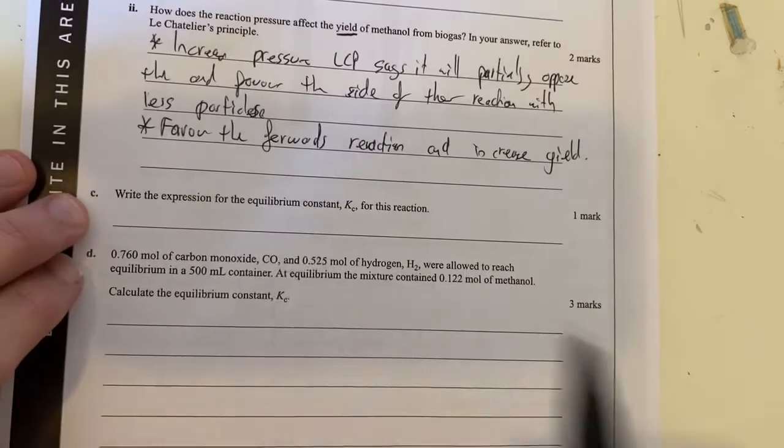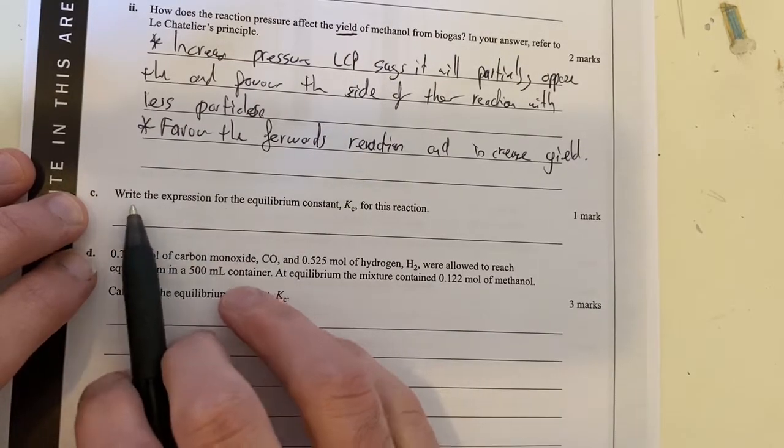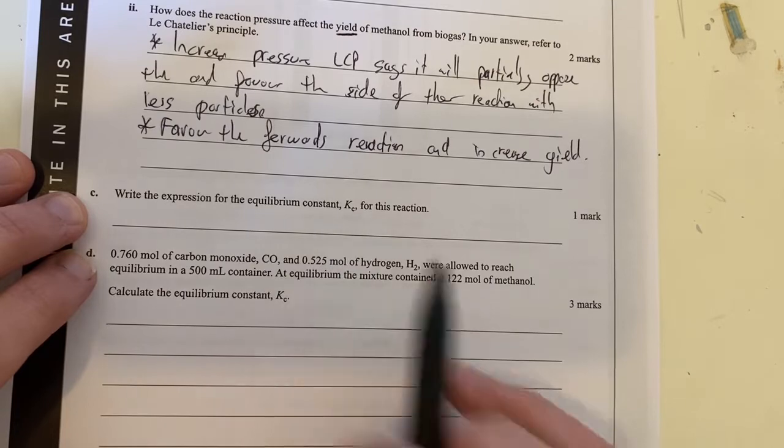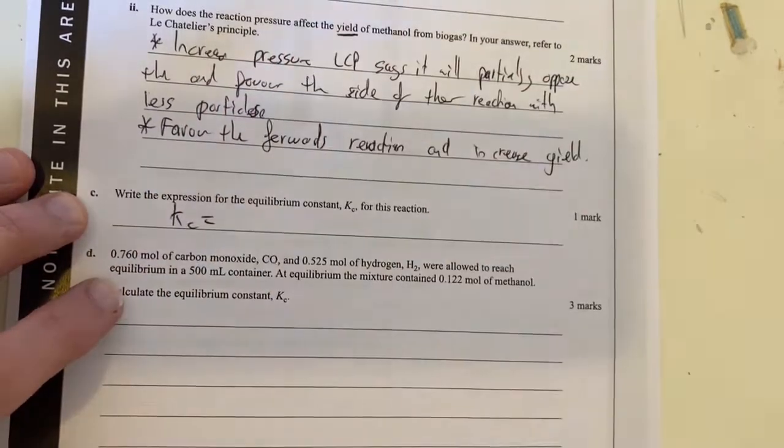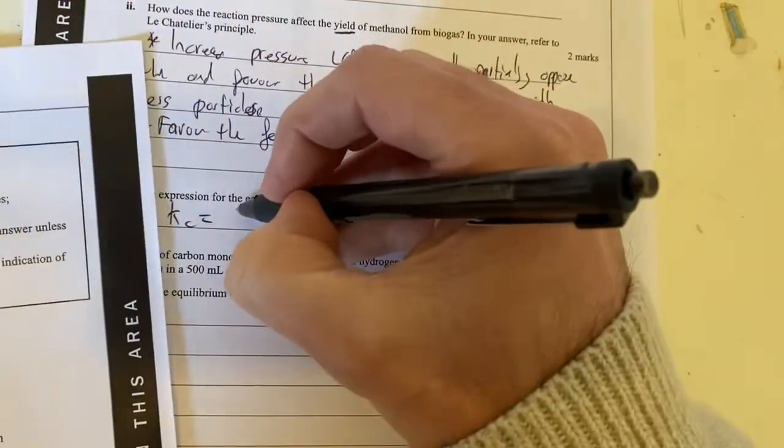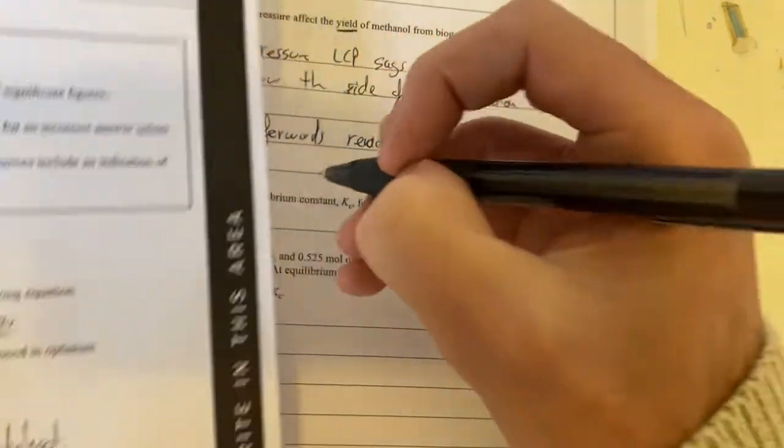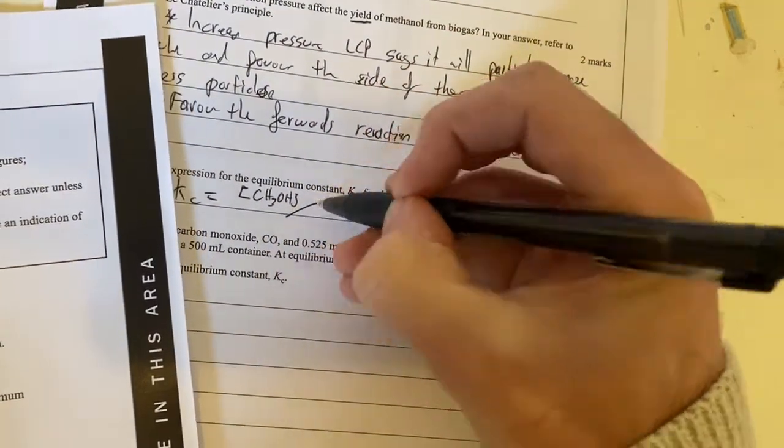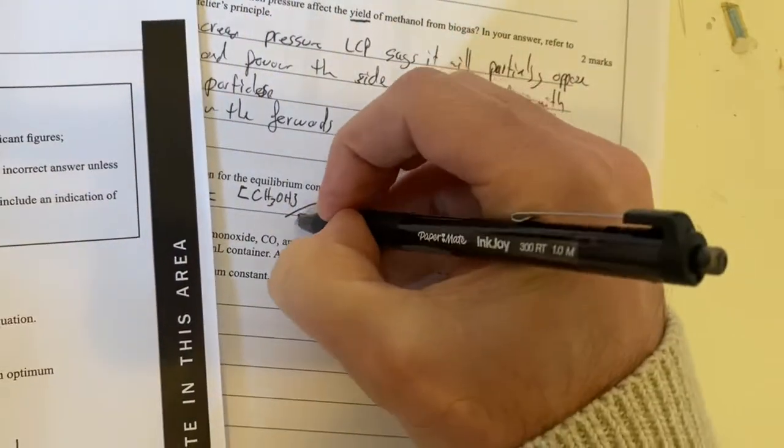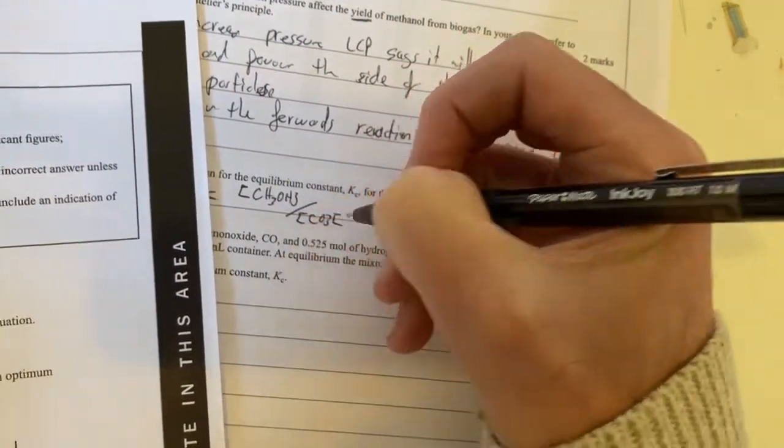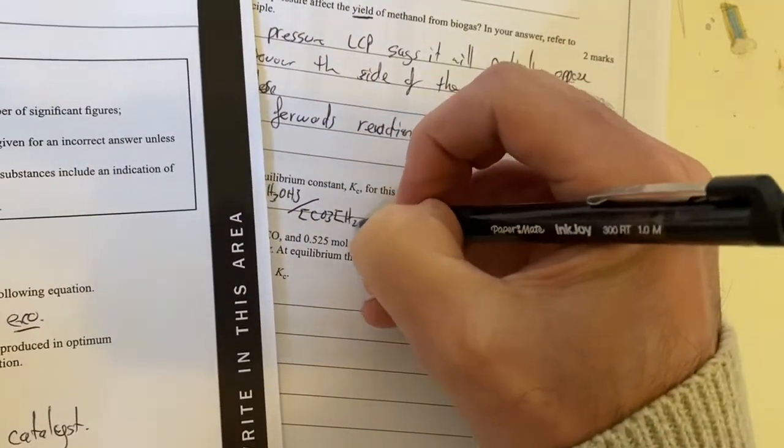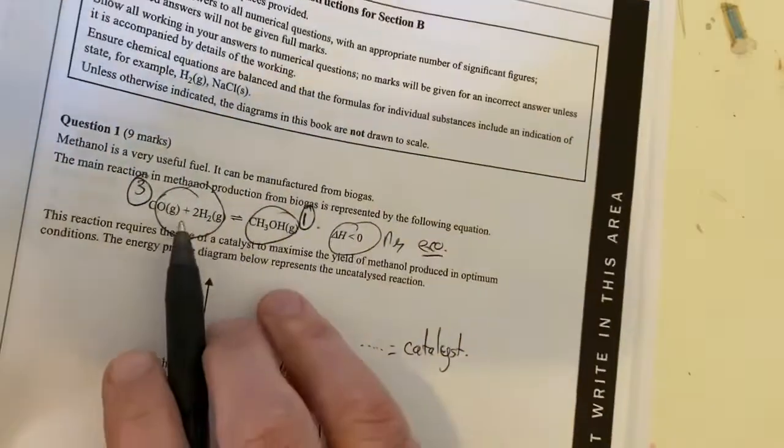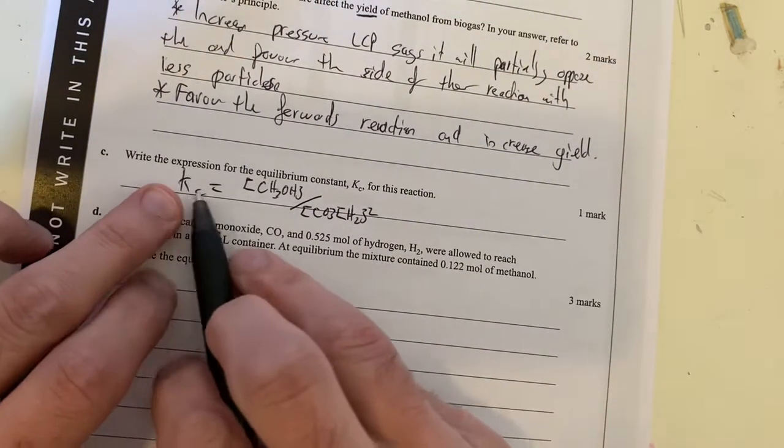Let's move on to part C. Write the expression for the equilibrium constant Kc for this reaction. Kc is going to be equal to concentration of products over reactants to their powers. So I'm going to say it's the concentration of my methanol, CH3OH, square bracket, divided by the concentration of carbon monoxide, times by the concentration of hydrogen squared, because my coefficient of hydrogen is 2 there. So therefore, I've got my equilibrium expression.